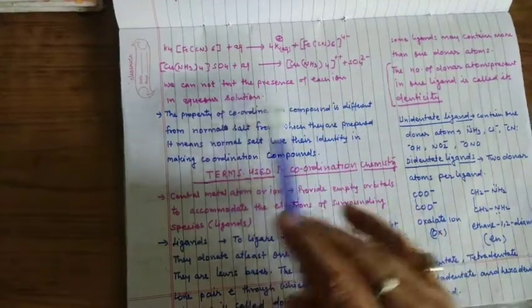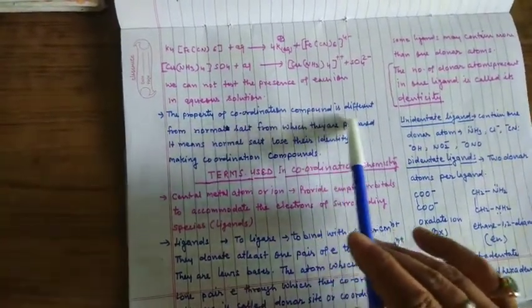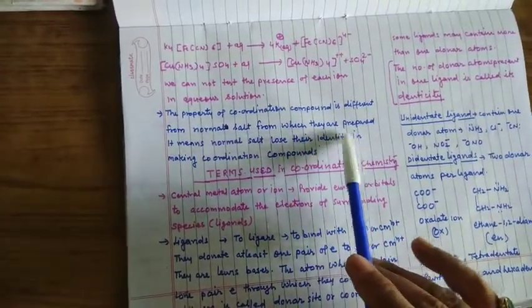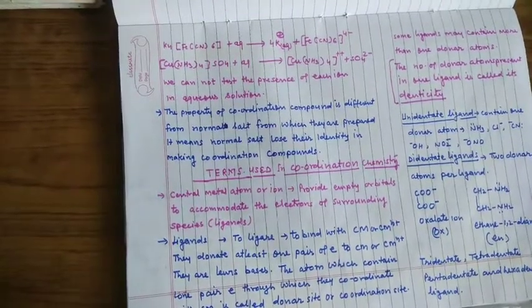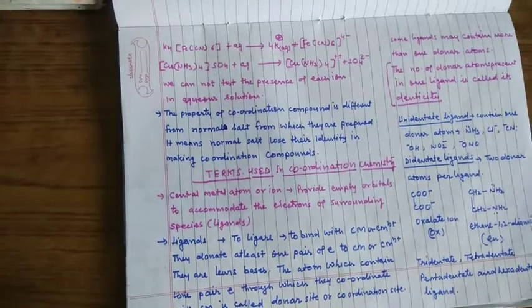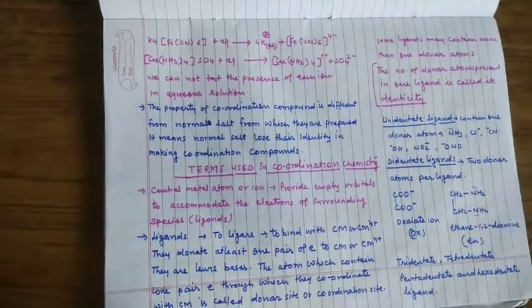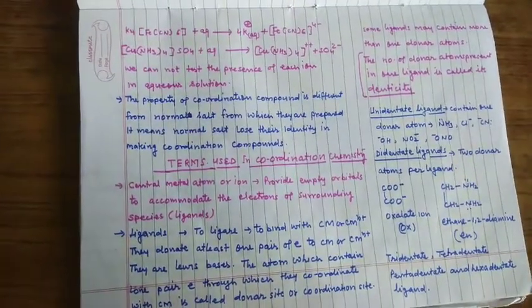So we cannot test the presence of each ion in aqueous solution. The property of the coordination compound is different from the normal salt from which they are prepared. It means normal salts lose their identity in making coordination compound. So now I think it is clear to all that what is difference between double salt and coordination compound.